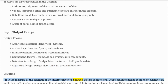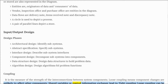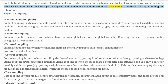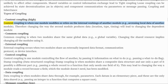Coupling is the measure of the strength of the interconnections between system components. Loose coupling means component changes are unlikely to affect other components. Shared variables or control information exchange lead to tight coupling. Loose coupling can be achieved by state decentralization, as in objects, and component communication via parameters or message passing.